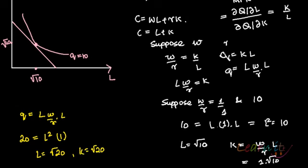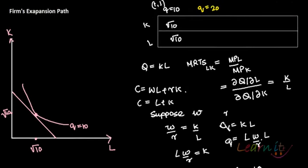So when you want to produce Q = 20 at the same input prices W/R = 1, your cost-minimizing input choices become L = √20 and K = √20. The isocost line will shift outward.